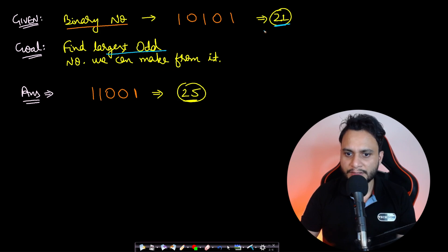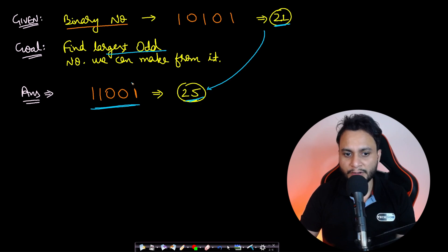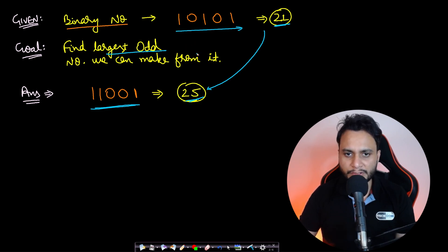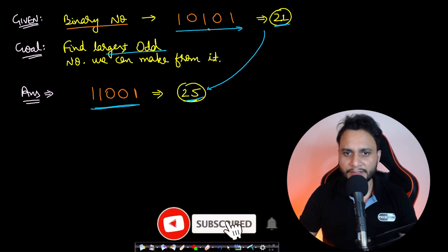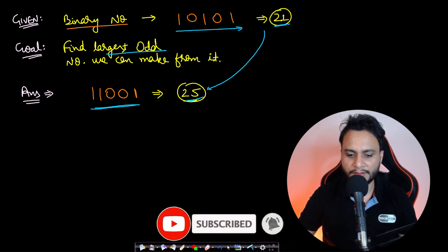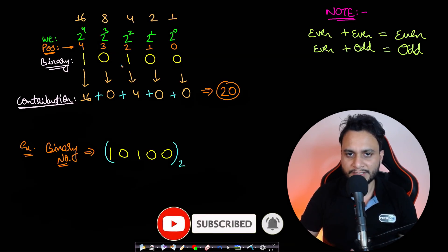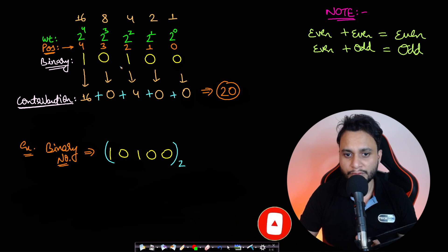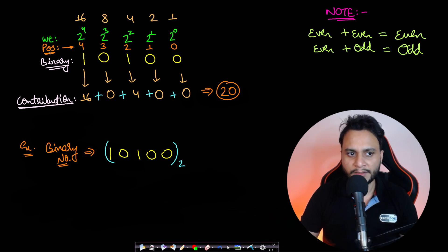The answer in this case is 25, which is the largest binary number you can form that is odd, using the same number of set bits. What we really did was rearrange the set bits and the unset bits. Now let's look at how to arrive at such an answer.